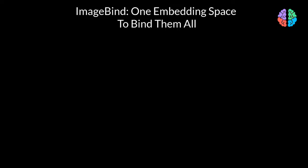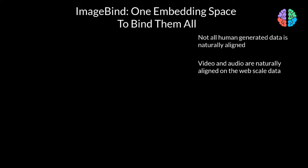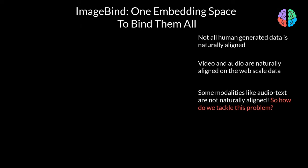Though there is an abundance of data on the web generated by humans, only some are naturally aligned with images or videos. For example, videos on the web naturally have audio in them, with which we can train just an image-audio model. But what about other modalities like audio and text? They are not naturally aligned or paired together. So, can we come up with a way to bind many modalities together with images?